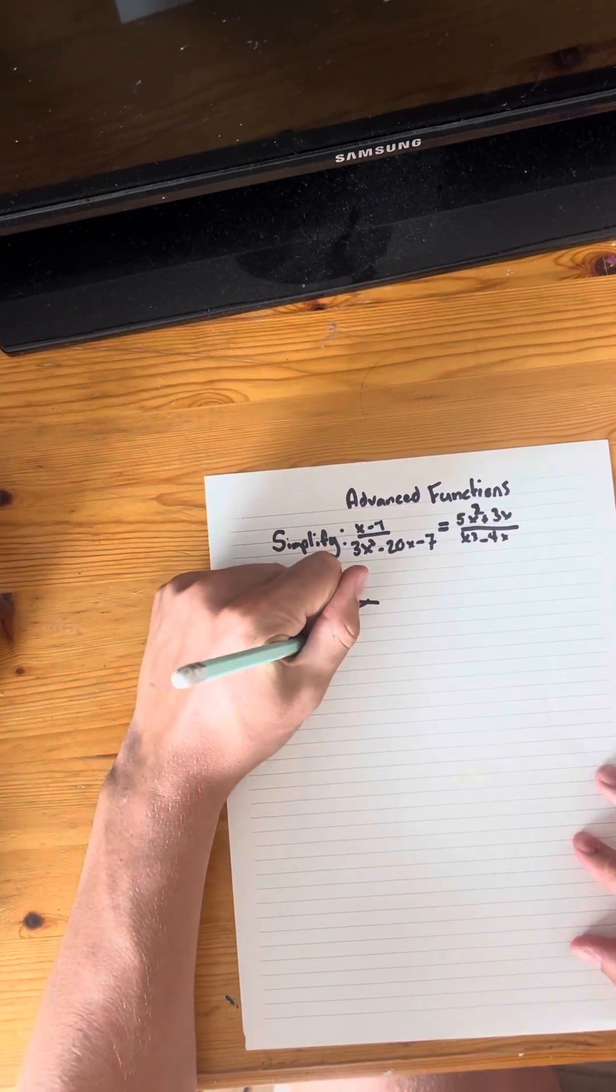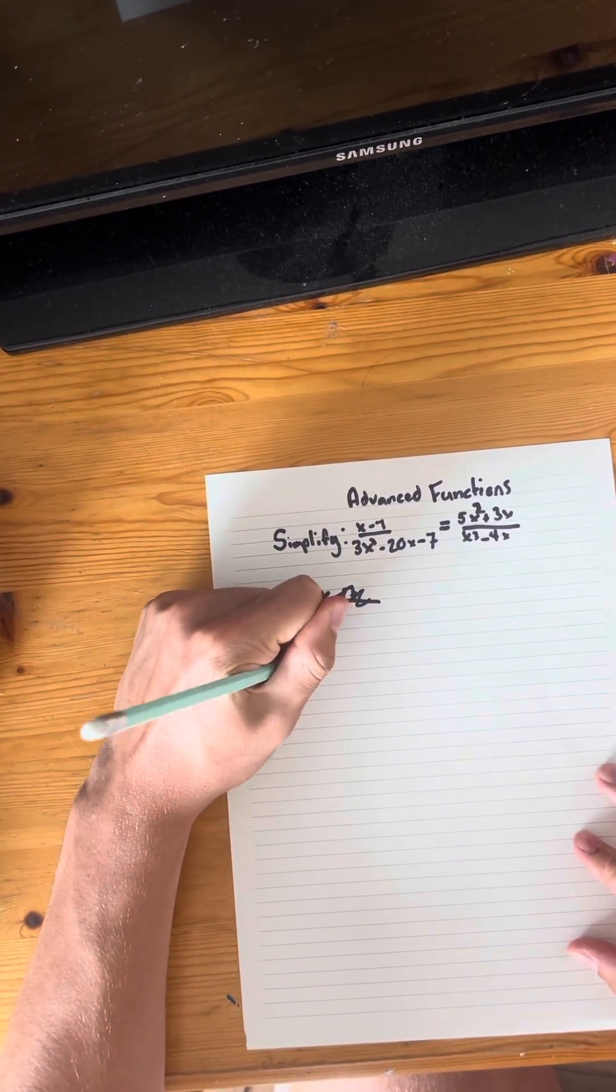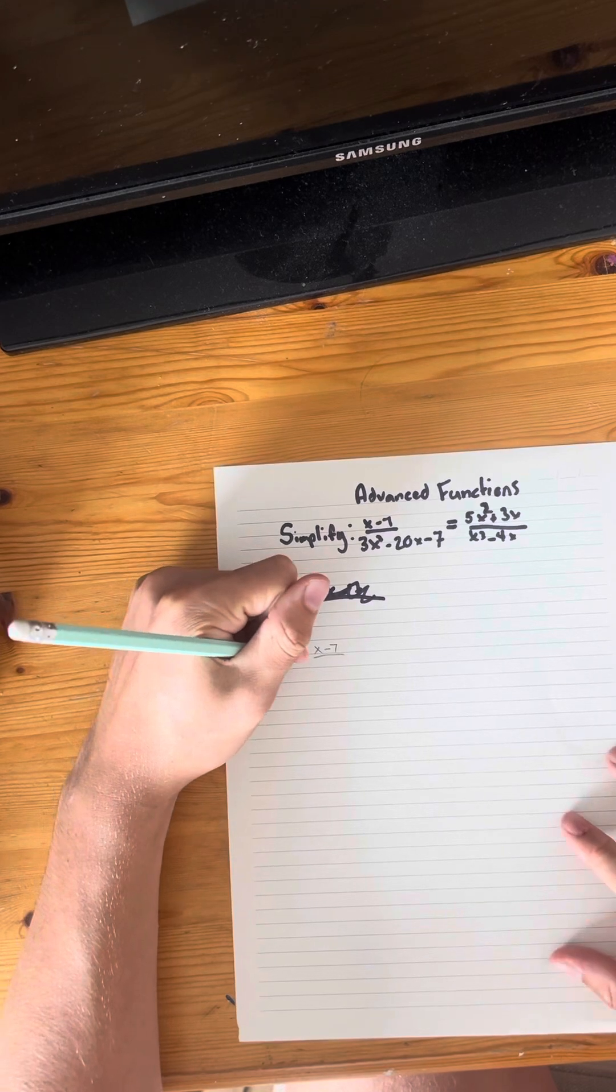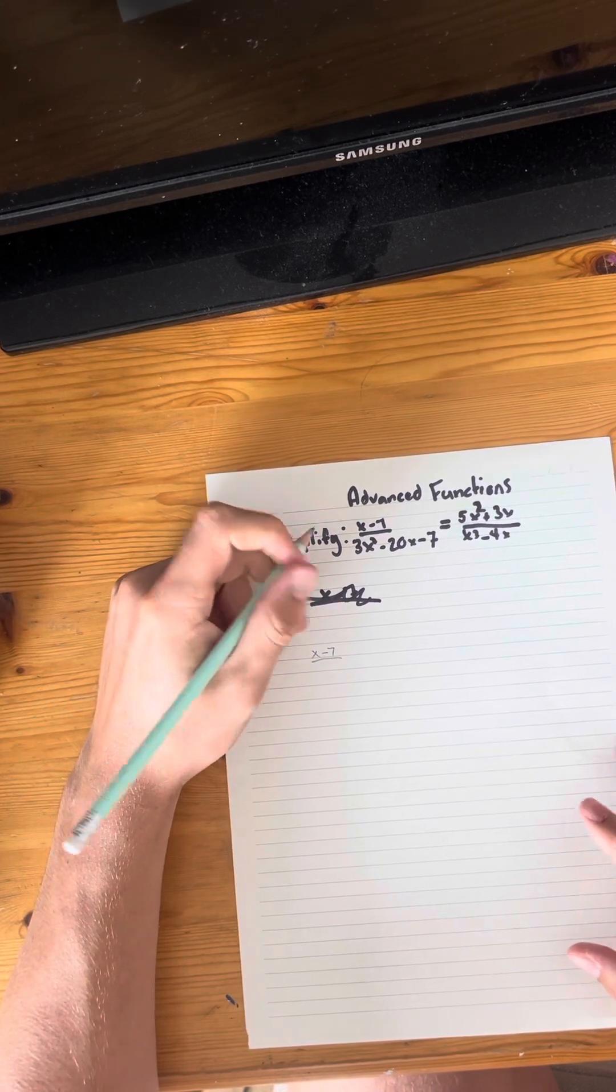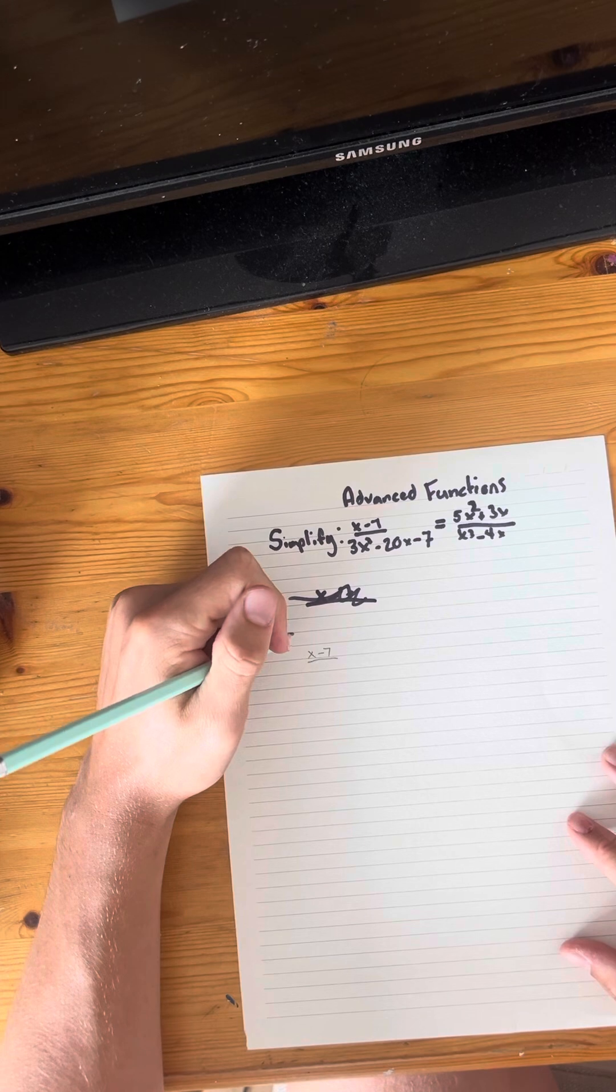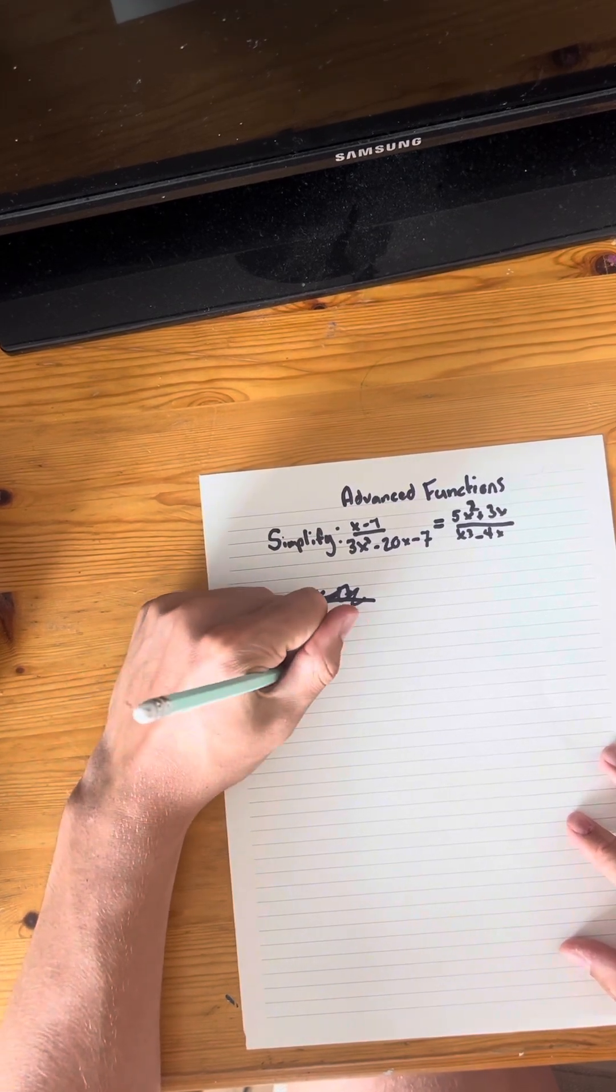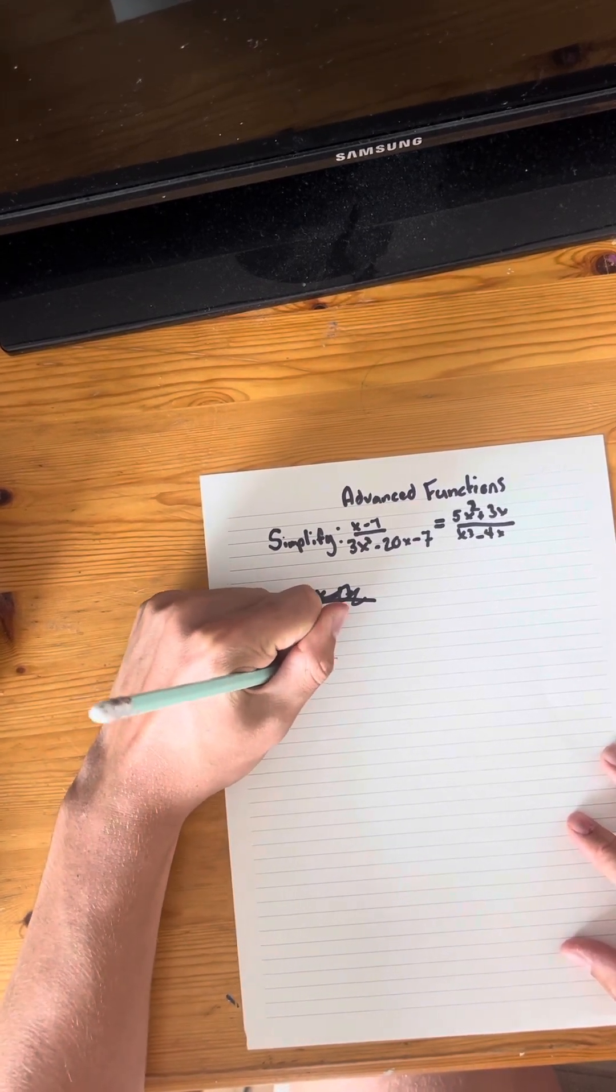First thing I'm going to do is I'm going to start with the numerator here, x take away seven, because I want to be factoring these. I want to be simplifying this. I'm just going to see the denominator below and we can definitely simplify that. So we're going to start writing it down.